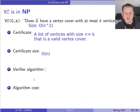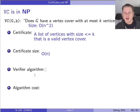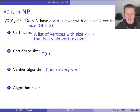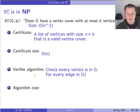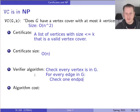The verifier algorithm is usually the part that is least obvious or might require some thinking. We have to be really careful about what it means to not get fooled — we want to really distrust the certificate and check everything about it. We check that all are legitimate vertices in the graph, and then for every edge in G, we make sure that it's covered by one of the vertices in the cover — meaning one endpoint of that edge is in the certificate.